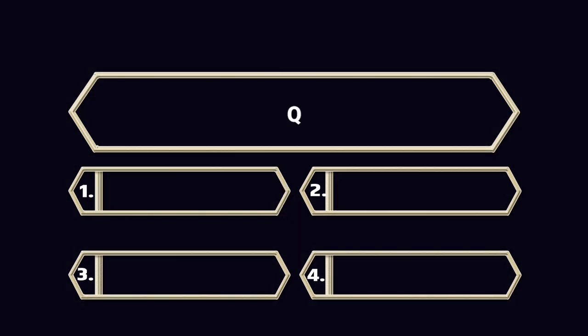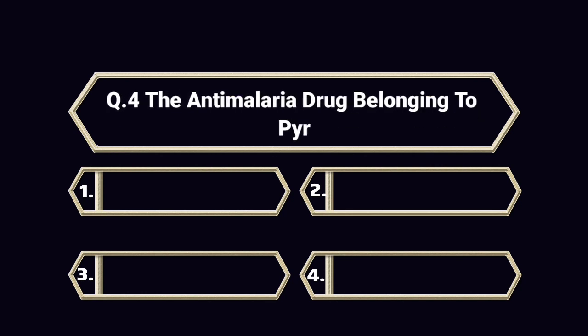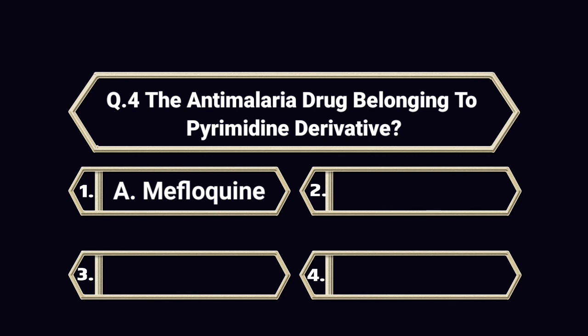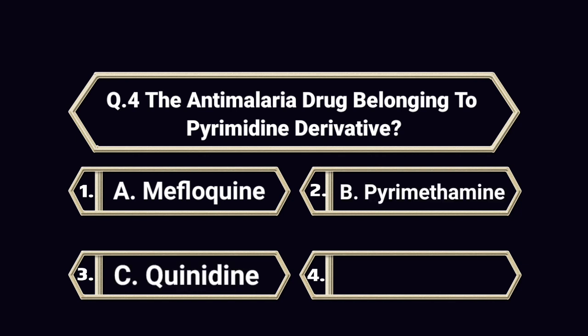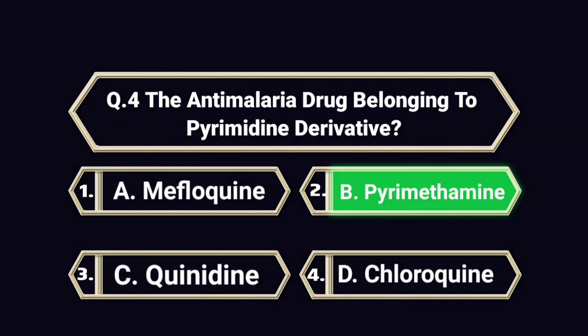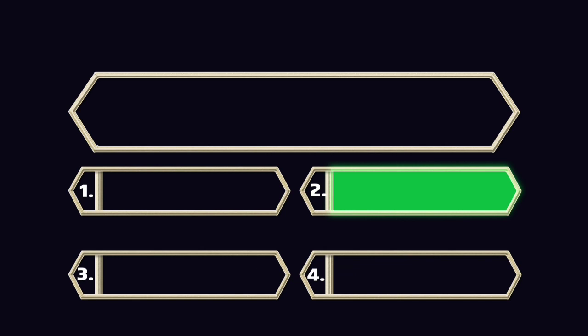Question number 4. The anti-malarial drug belonging to the pyrimidine derivative. A. Mefloquine. B. Pyrimethamine. C. Quinidine. D. Chloroquine. Answer is B. Pyrimethamine.